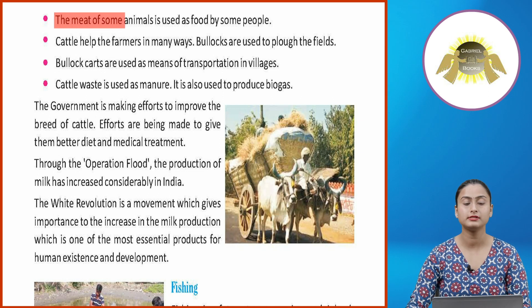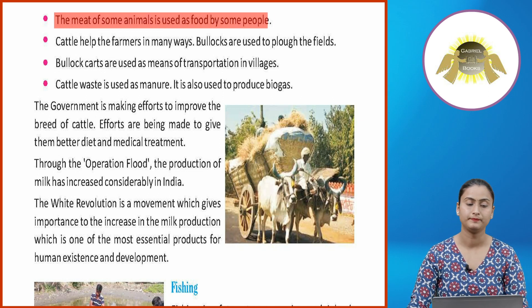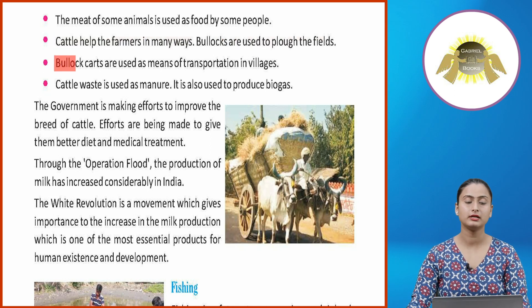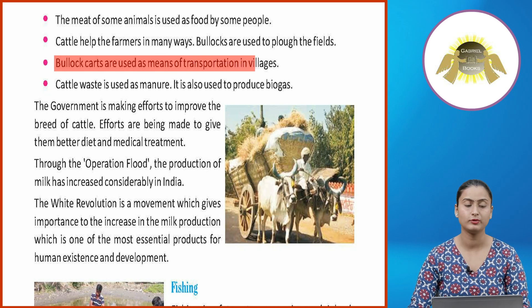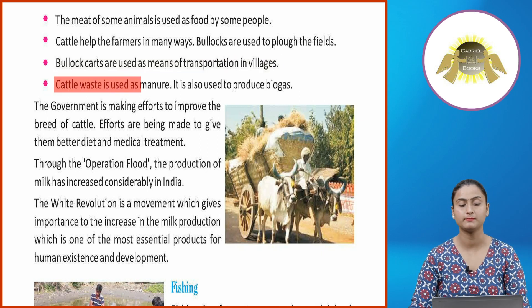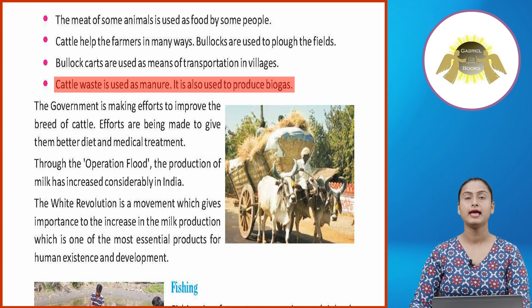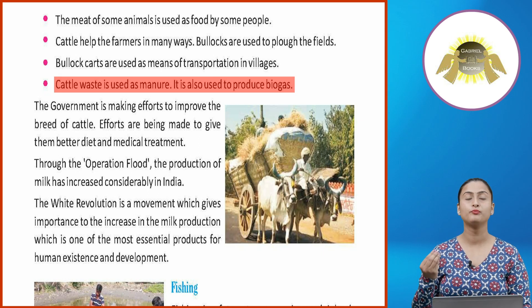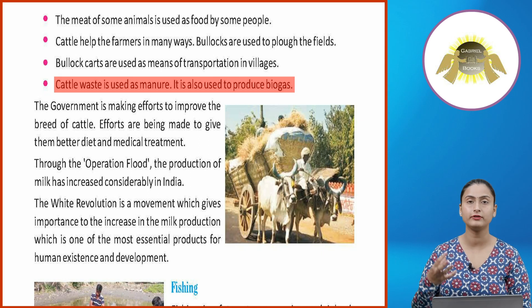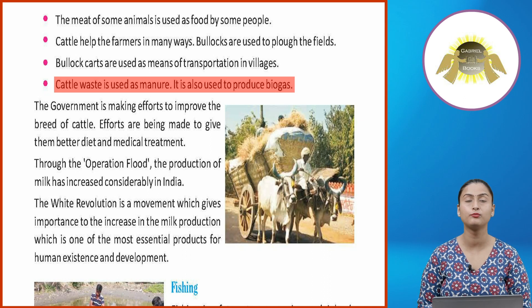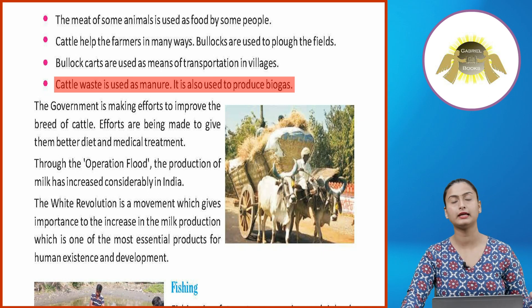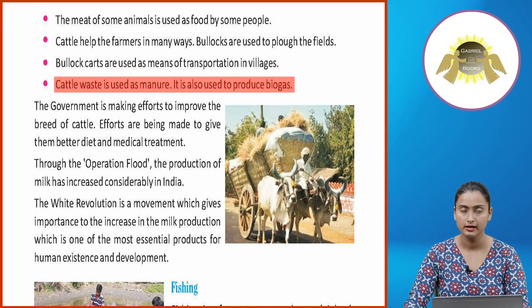The meat of some animals is used as food. Cattle help farmers in many ways — bullocks are used to plow the fields, bullock carts are used as means of transportation in villages, and cattle waste is used as manure and also to produce biogas.